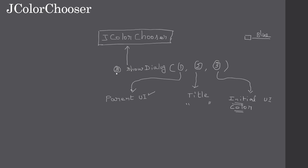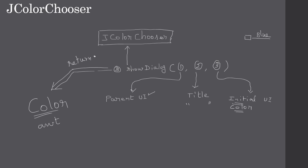When we call showDialog, the static method will return a Color object. We can use this Color object to set the foreground and background of the text area. That's all the theory - now we will go to Eclipse to see the demo.